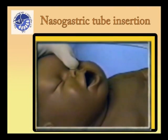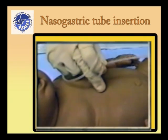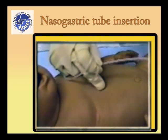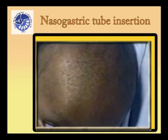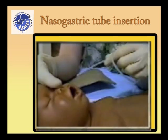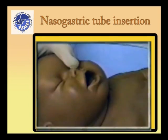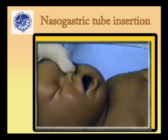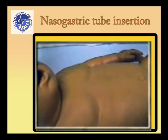Insertion of nasogastric tube is a relatively safe procedure and easily accomplished in infants and children. A tube may be introduced through the nose or mouth and passed through the stomach or duodenum.